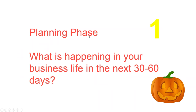The planning phase is about what's happening in your business life in the next 30 to 60 days. Today is October 1st — in the next 30 to 60 days we have celebrations coming up, all kinds of things in October beyond Halloween, plus Thanksgiving and other holidays. Take your calendar out, look at what opportunities are coming up to market your business.